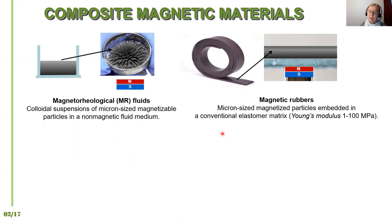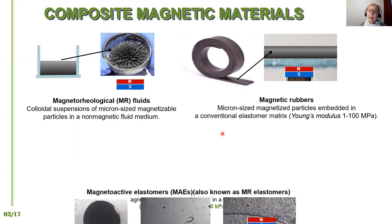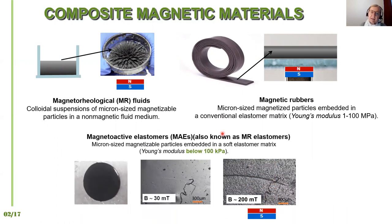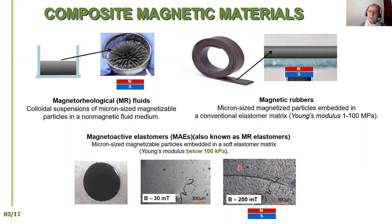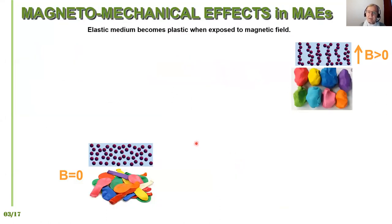Our materials are magneto-active elastomers, also known as magnetorheological elastomers. They have micron-size magnetizable particles embedded in a very soft elastomer matrix. This matrix has a Young's modulus below 100 kilopascals — soft like human skin or even softer. What is very specific about magneto-active elastomers is that they experience very large changes in their mechanical and other physical properties as a function of magnetic field.